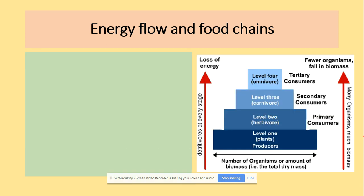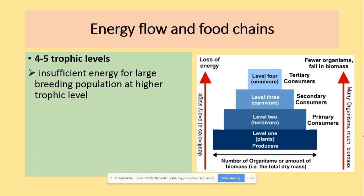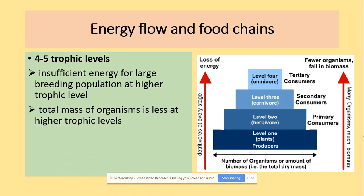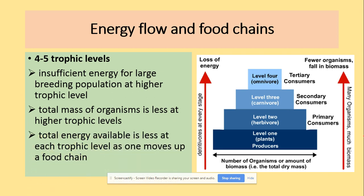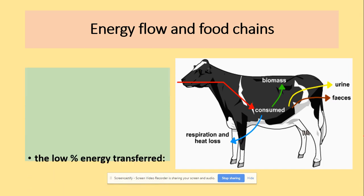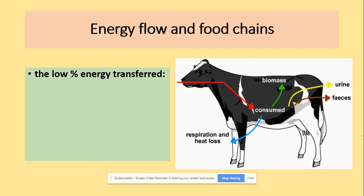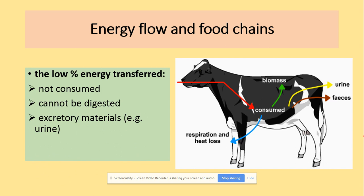Energy flow within food chains is limited to about four to five trophic levels because there is insufficient energy for large breeding populations at higher trophic levels. The total mass of organisms and the total energy available decrease at each trophic level as one moves up the food chain. Energy is lost through many activities, mainly respiration — which you always need to mention in your answers. A low percentage of energy is transferred because some is not consumed, some cannot be digested, some is lost as urine or feces, and some is used to maintain body temperature.